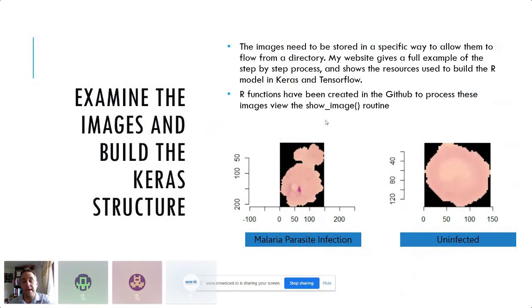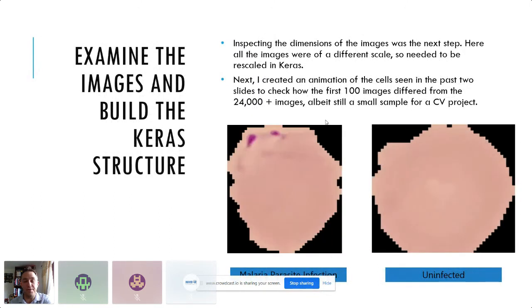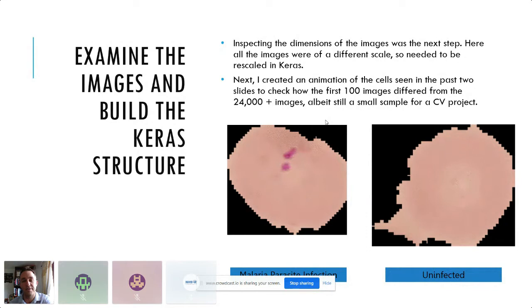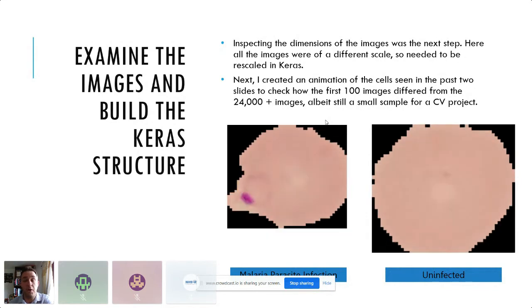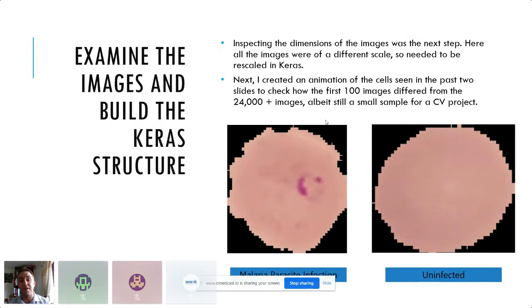The next few slides will take you through my thought process of building the model. What we needed to do first of all is examine the images. These are what the images look like. The presence of the parasite is quite small in the cell on the left-hand side. The uninfected cell gives you an area to convolve over as well. My website gives you an example of how to build this end-to-end. I've also included all my code in a GitHub repository.